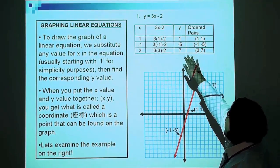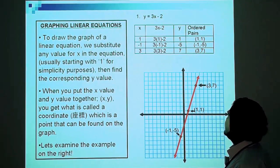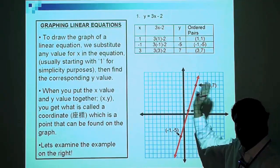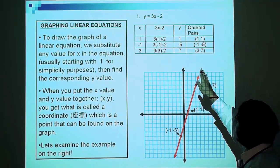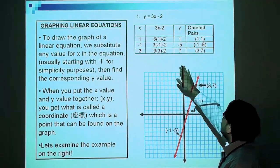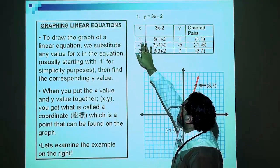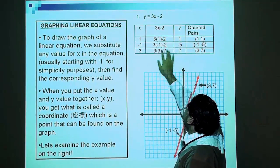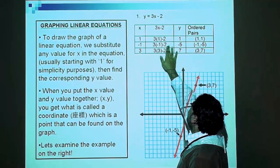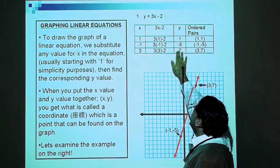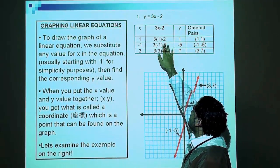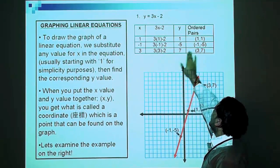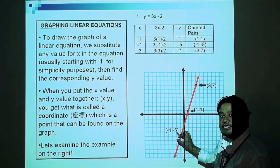The linear equation here, right on top, y equals 3x minus 2. As mentioned before, we know that the gradient or slope is 3 and the y-intercept is negative 2. We substitute values for x. Start with 1, put 1 in the general formula, and you get y = 1. Substitute negative 1, and y = negative 5. Substitute 3, and y = 7. So if you put x and y together, you get points on a graph. These are called coordinates.